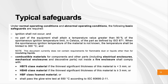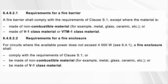Now let's look at safeguards, which is very important. Some basic safeguards: no part of the equipment should attain a temperature greater than 90% of the spontaneous ignition temperature of the fuel material, and also no more than 300 degrees Celsius, which is considered very dangerous in general. Combustible materials must also be of a certain class. There are also other types of safeguards, all explained in the standard.